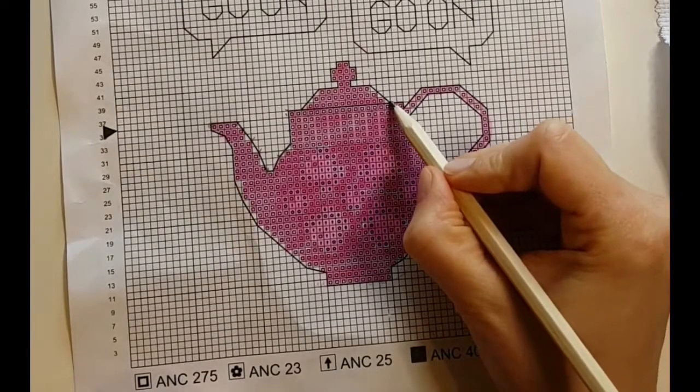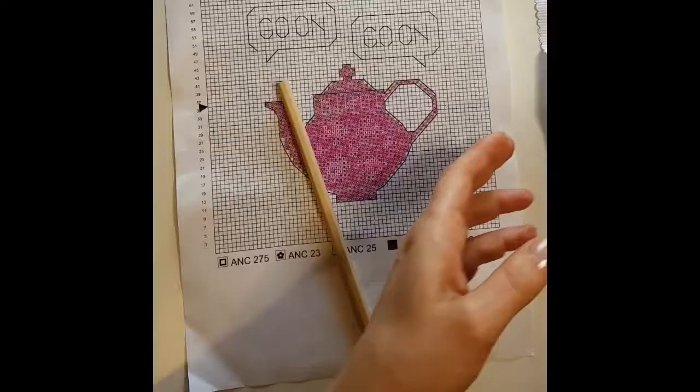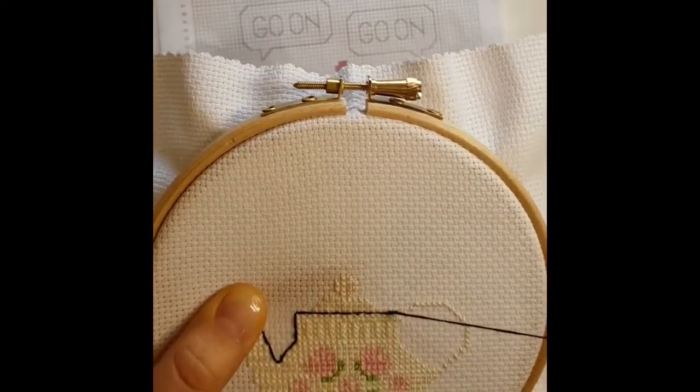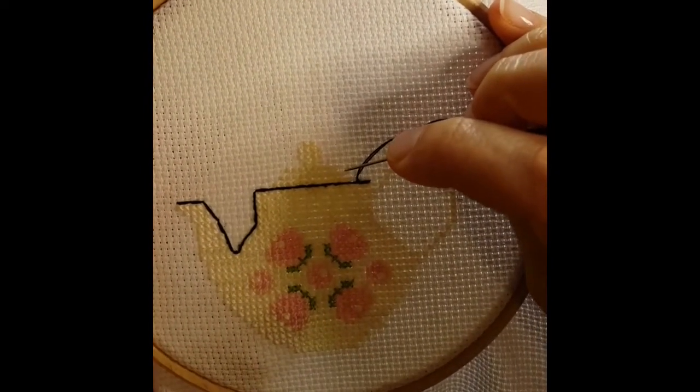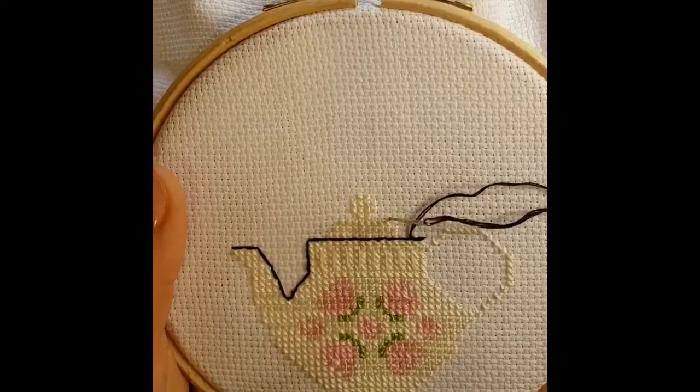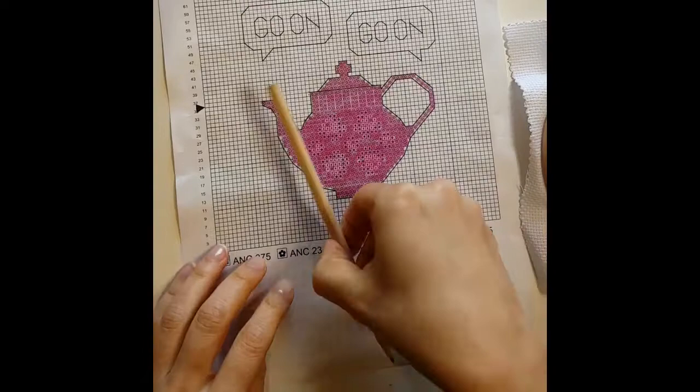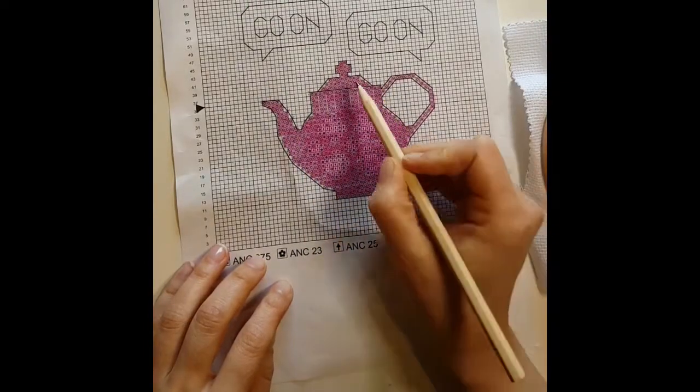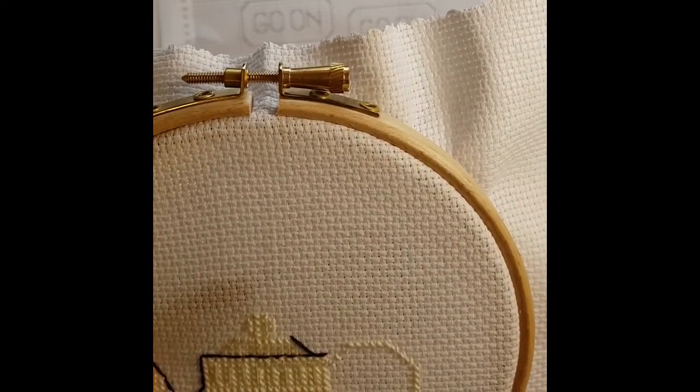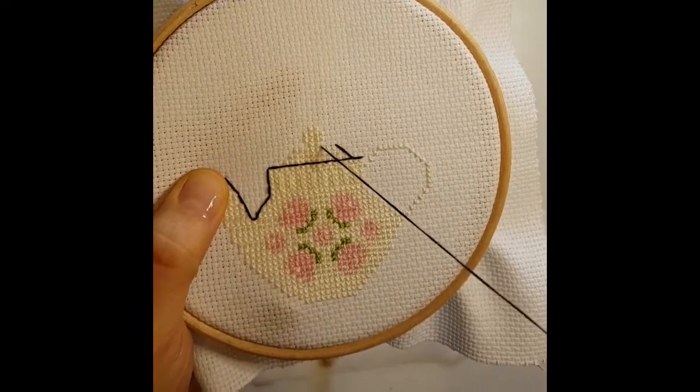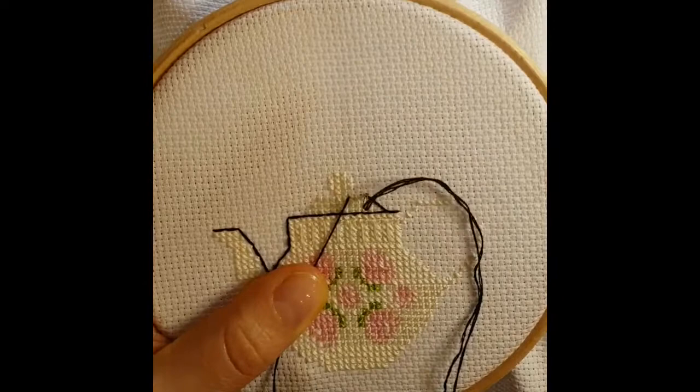Now I'm going to go from here and I'm going to do one, two, three. And we have one, one, two, three. We have another three, so make sure you pull it taut, especially when you do the longer stitches.